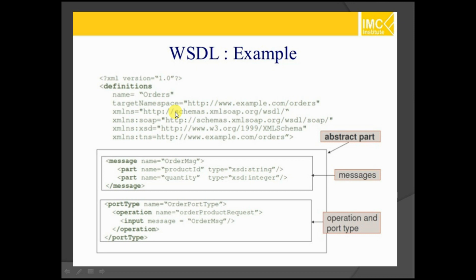Then here, the abstract part is specified. The abstract part contains messages, operations, and port type. A message will have an order message, which has a name and a part name. If you want to get product information, you can define it with product ID and quantity. You have to specify the type — for example, product ID is a string. Quantity can be an integer value like 10 or 2 or 1. And the port type — whatever order port type you specify — that same name should be referenced here.